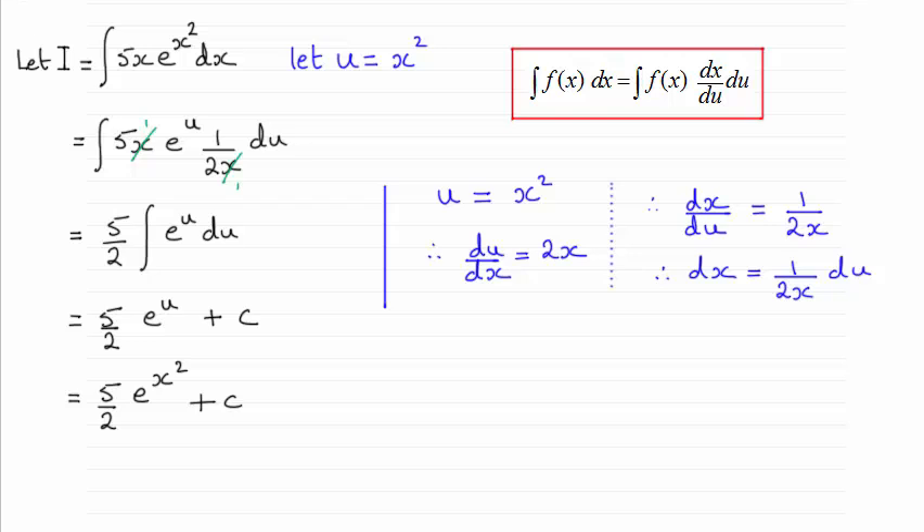Well, for this one, the final answer is 5 over 2 times e to the power x squared plus c, a constant of integration. So I hope you're able to get that. If not, I'll just show you what we do.